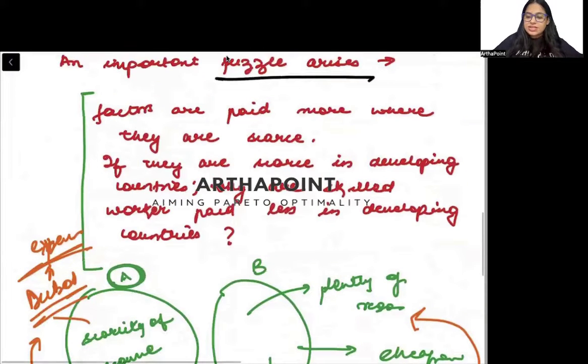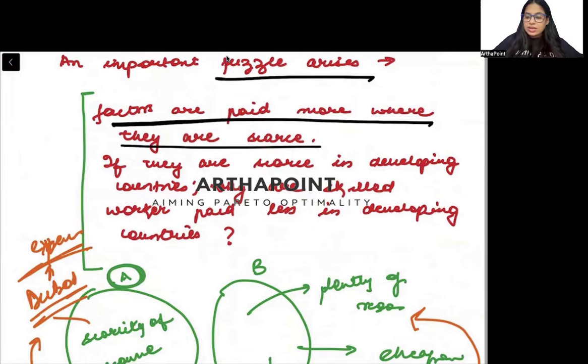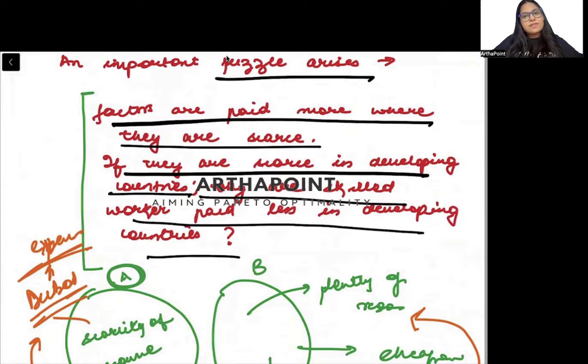What is the puzzle? The puzzle arises that factors are paid more where they are scarce. If they are scarce in the developing country, why are skilled workers paid less in the developing country? So, I leave that to you to think about why is it the case that the skilled labor are still paid less in the developing countries. That was fact number seven for you.